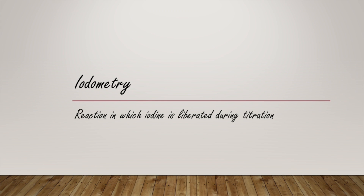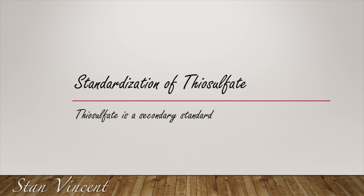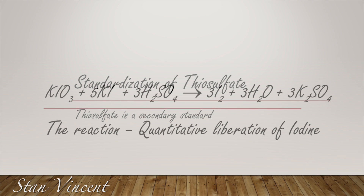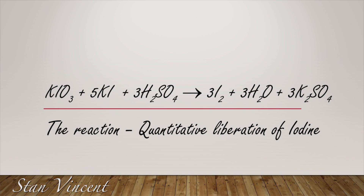In this video we're going to see a quick look at iodometry, which is a titration that takes place when iodine is liberated by a chemical reaction and the liberated iodine is titrated against a reducing agent. The reducing agent we're going to use is sodium thiosulfate, and we want to determine the molar concentration of sodium thiosulfate. As we already know, sodium thiosulfate is a secondary standard.